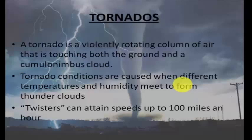Tornadoes are also known as twisters or cyclones and can attain speeds of up to 100 miles per hour. They come in many shapes and sizes but are typically in the form of a visible condensation funnel whose narrow end touches the earth, often encircled by a cloud of debris and dust. Most tornadoes have wind speeds less than 110 miles per hour, are about 250 feet across, and travel a few miles before dispersing. The most extreme tornadoes can attain speeds of 300 miles per hour.